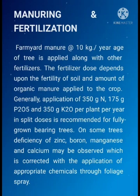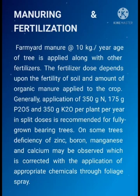Manuring and Fertilization. Farm-yard manure at the rate of 10 kg per year of age of tree is applied along with other fertilizers. The fertilizer dose depends upon the fertility of the soil and amount of organic matter applied to the crop. Generally, the application of 350 grams of nitrogen, 175 grams of P2O5 and 350 grams of potassium per plant per year in split doses is recommended for fully grown bearing trees. On some trees, deficiency of zinc, boron, manganese, and calcium may be observed, which is corrected with the application of appropriate chemicals through foliar spray.